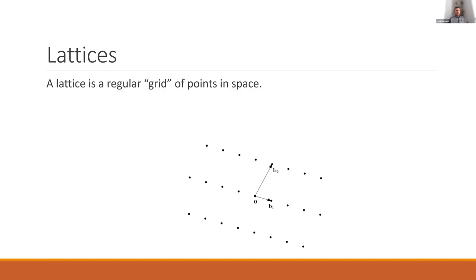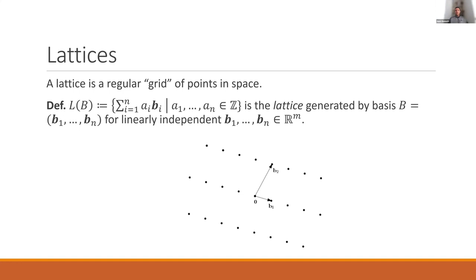The first object of study today will be lattices. Informally, a lattice is a regular grid of points in Euclidean space. More formally, it's the set of all integer linear combinations of n linearly independent vectors B1 up to Bn. In this picture, we have a two-dimensional lattice spanned by the basis vectors B1 and Bn.